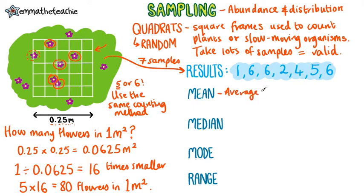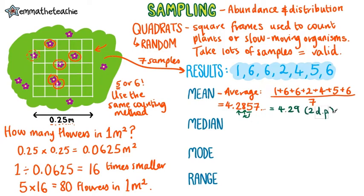The mean is just the average. So to do this, all you do is add up all of the numbers and divide by how many values you have. So in this case we had 7 samples, so we divide by 7, and this would give us 4.2857. Questions will specify if they want it to 2 decimal points or 2 significant places. In this case we'll do it to 2 decimal points, and the 5 makes the 8 round up to give us 4.29.